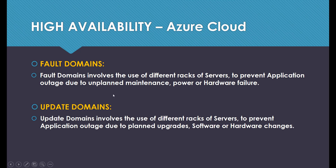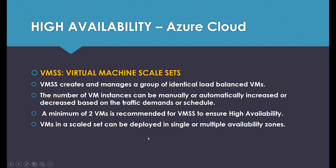The basic difference is that fault domains are for unplanned maintenance, and update domains are for planned upgrades. Finally, we have virtual machine scale sets, which create and manage a group of identical load-balanced VMs. But in this video, we're not going to cover that — we'll do it in the next video.